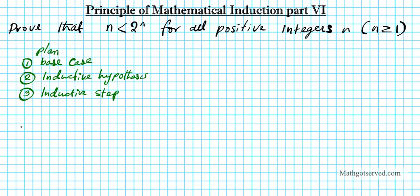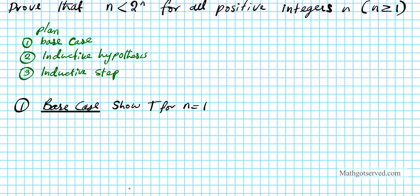Let's start with part one: the base case. We want to show the statement is true for n equals 1, because for the set of all positive integers the base is n equals 1. For the base case we just plug in 1 into the statement: is 1 less than 2 to the 1? Is 1 less than 2? Absolutely, so the base case holds.